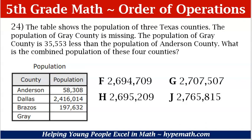F: 2,694,709. G: 2,707,507. H: 2,695,209. J: 2,765,815.